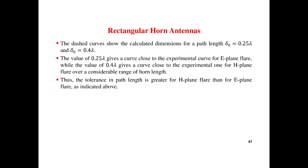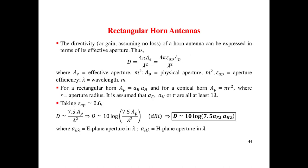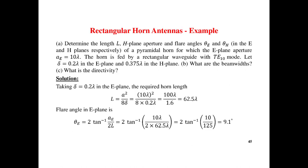For the design, directivity D equals 4 pi AE by lambda squared. Substituting the value of AE, it becomes 2 by tau AB AP by lambda squared. So D equals 7.5 AP by lambda squared, which equals 10 log 7.5 AP by lambda squared in dB. You have to substitute D equal to 10 log 7.5 AE lambda AH lambda.